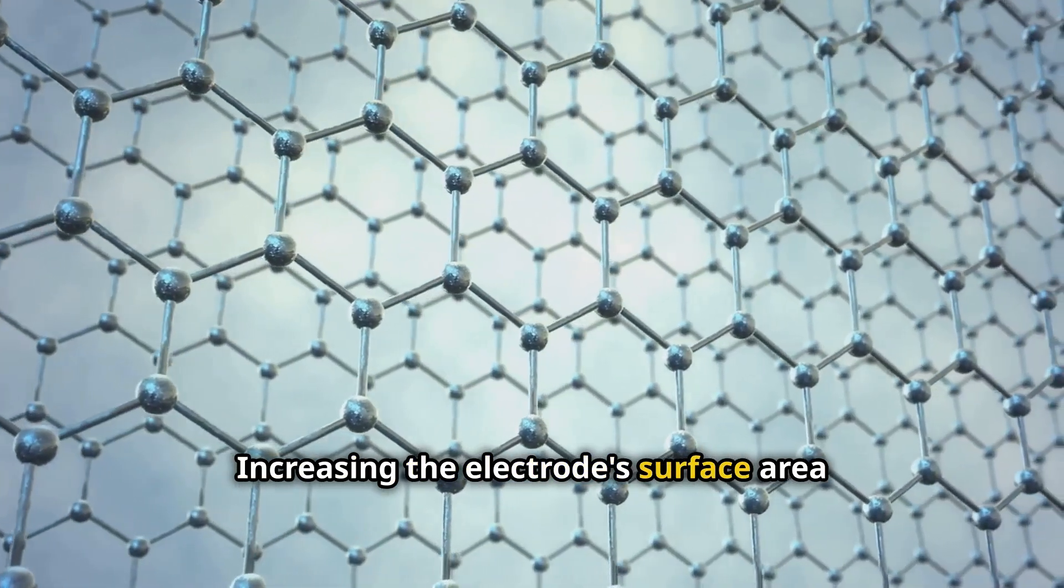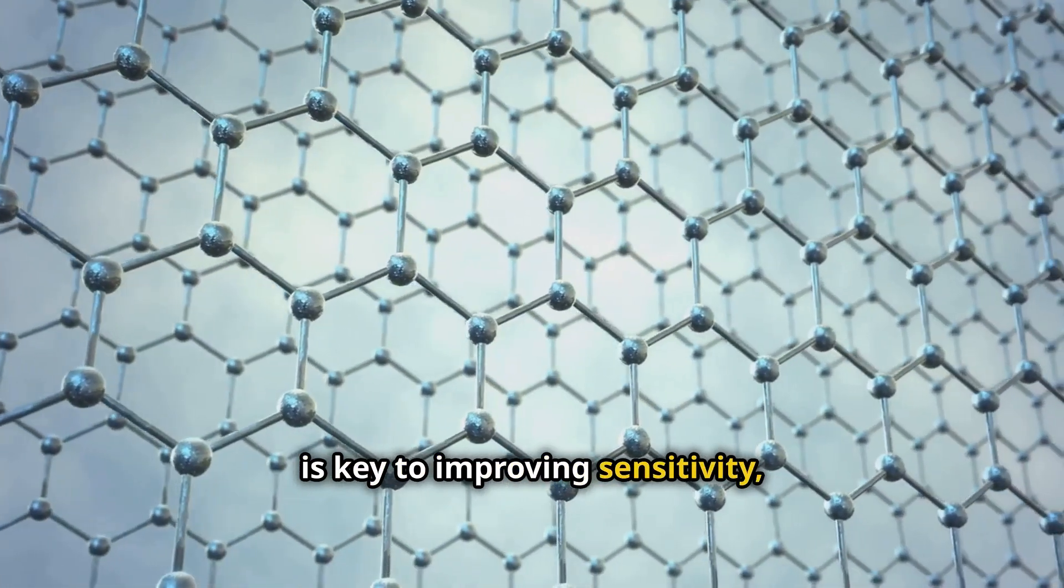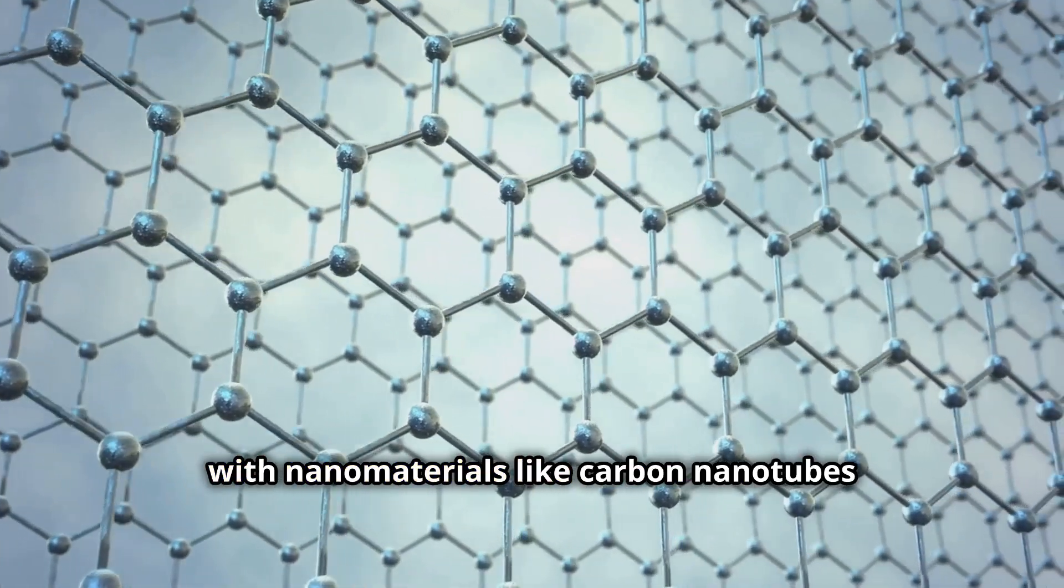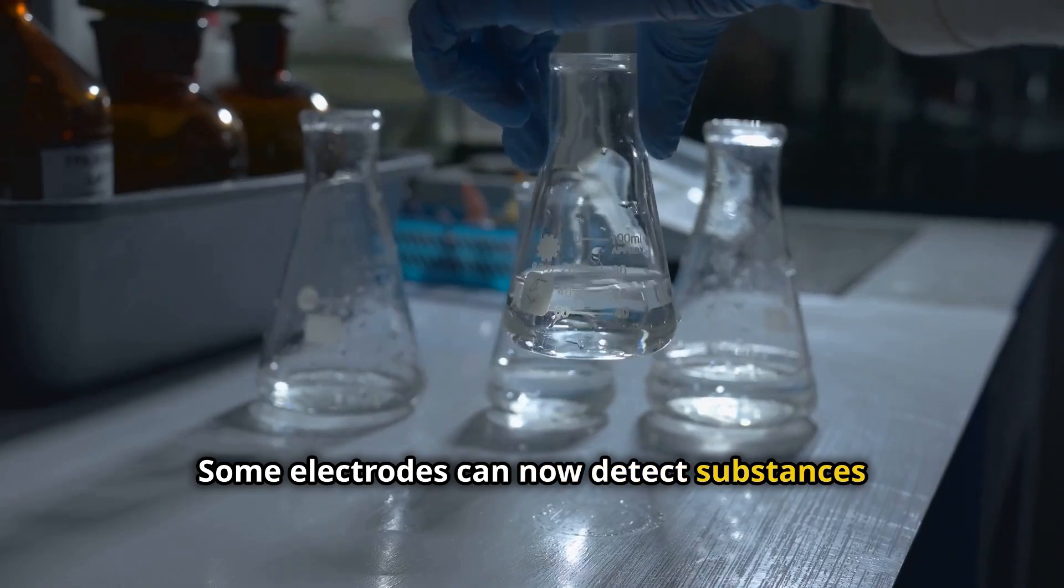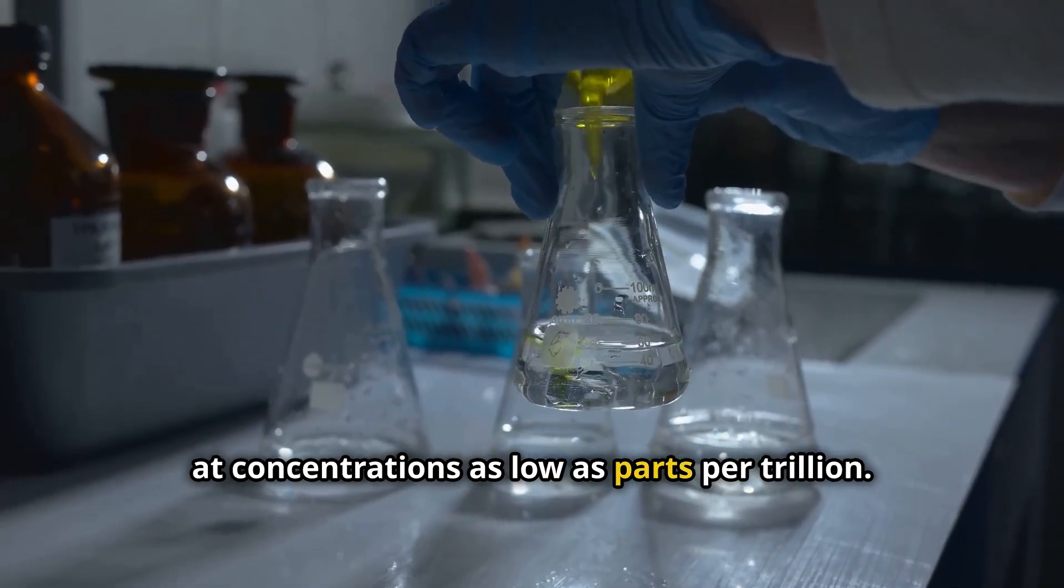Increasing the electrode surface area is key to improving sensitivity, with nanomaterials like carbon nanotubes and graphene playing a crucial role. Some electrodes can now detect substances at concentrations as low as parts per trillion.